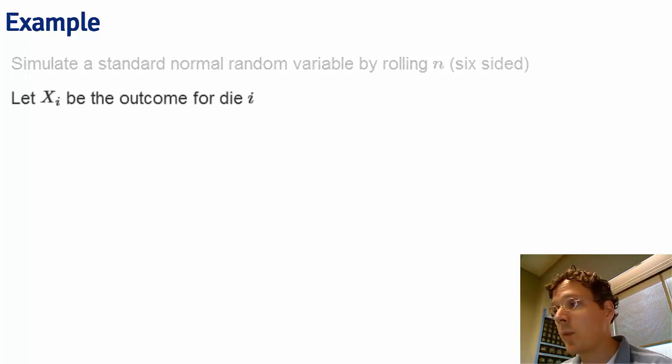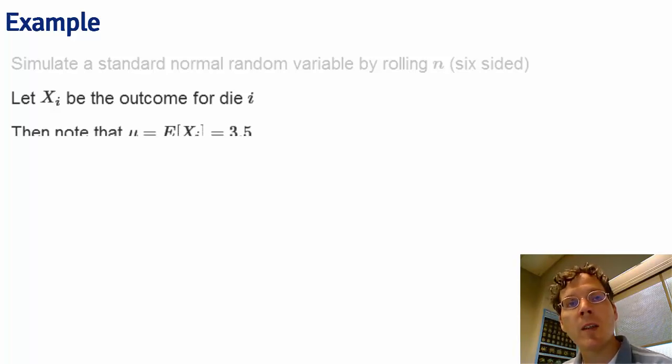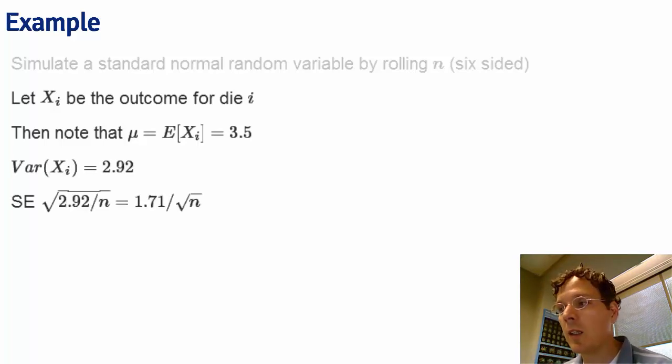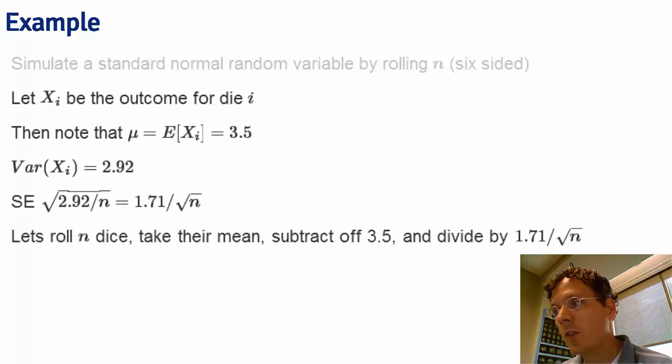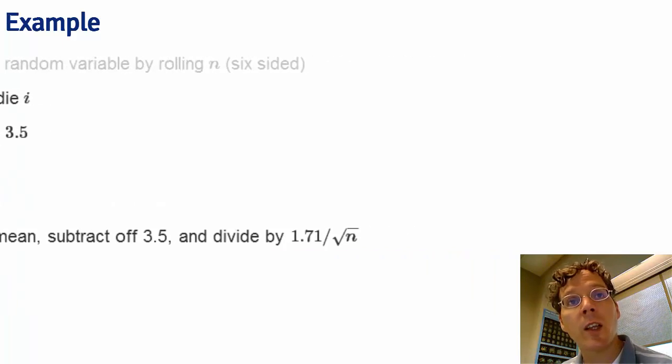So let's let Xi be the outcome for die i. And remember that the mean of the distribution of die rolls is 3.5 and that its variance is 2.92. So the standard error of the mean is square root 2.92 over n. So let's roll n dice, take their mean, subtract off 3.5, and divide by 1.71 over square root n. And repeat this over and over again. If the central limit theorem is right, this should look exactly like a standard bell curve.